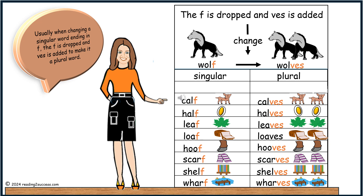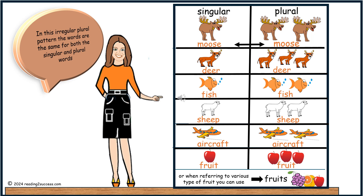Usually, when changing a singular word ending in F, the F is dropped and -VES is added to make a plural word. As shown in our example, wolf ends in F, and more than one wolf — the plural is wolves, with the F changed to add -VES. In another irregular plural pattern, the words are the same for both singular and plural, as in moose, deer, fish, sheep, aircraft, and fruit.